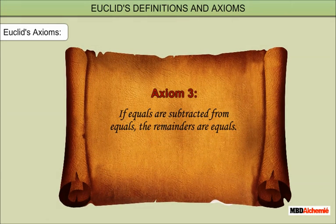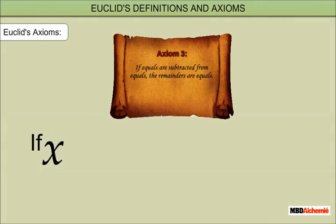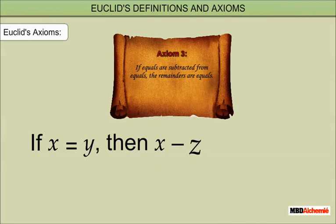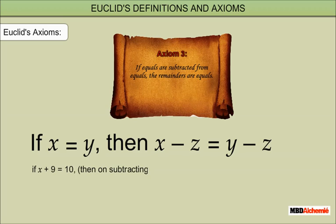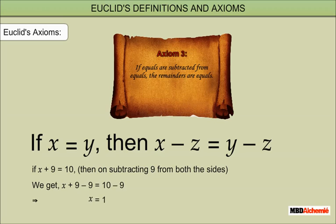Axiom 3: If equals are subtracted from equals, the remainders are equal. That is, if x is equal to y, then x minus z is equal to y minus z. Example: if x plus 9 is equal to 10, then on subtracting 9 from both sides, we get x plus 9 minus 9 is equal to 10 minus 9, which implies x is equal to 1.